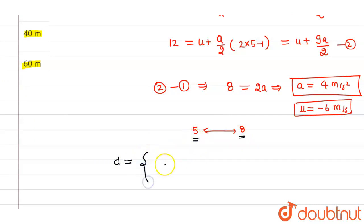This will be equals to the total distance traveled in 8 seconds minus distance traveled in 5 seconds. So distance traveled in 8 seconds will be ut plus half at square, where t is 8 and a is 4. Minus the distance traveled in the first 5 seconds, which is ut plus half a into t square.